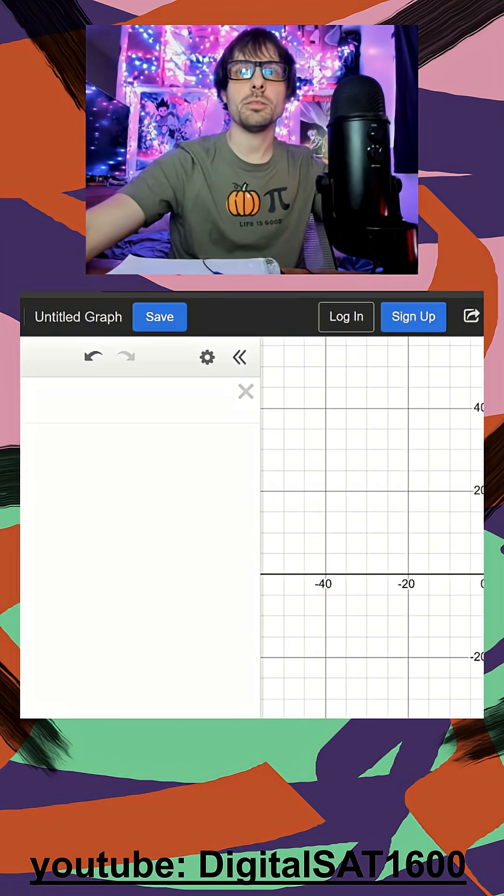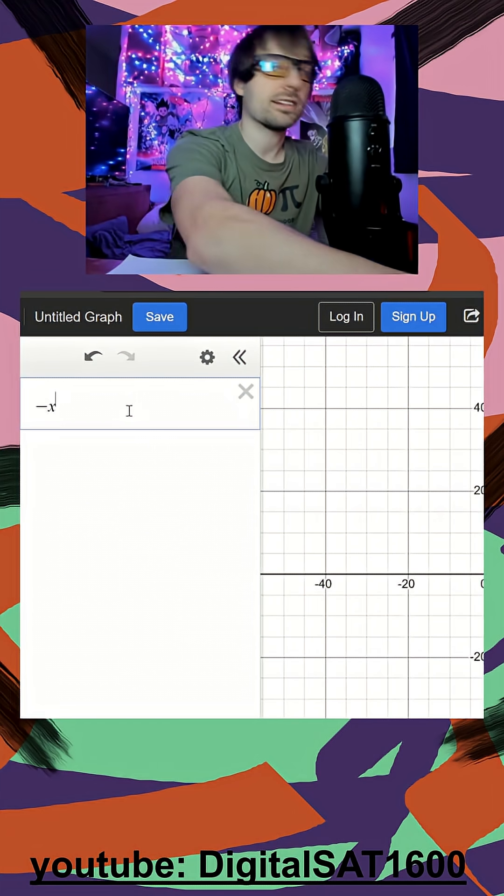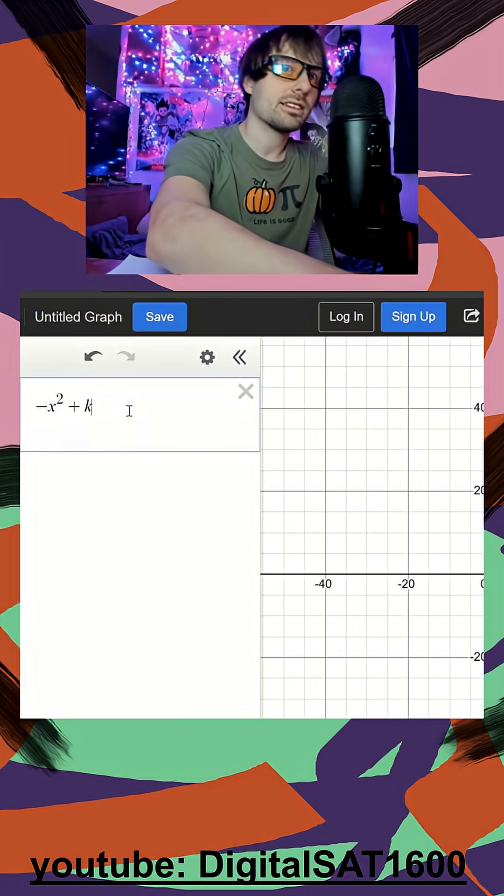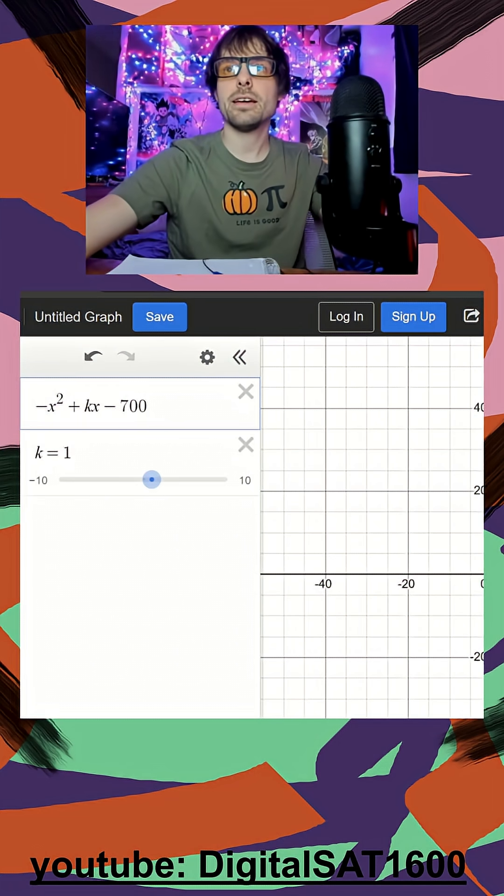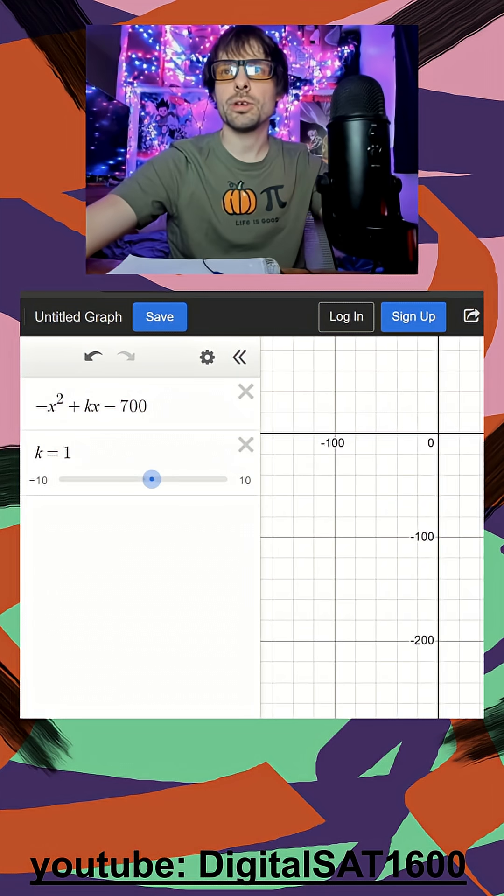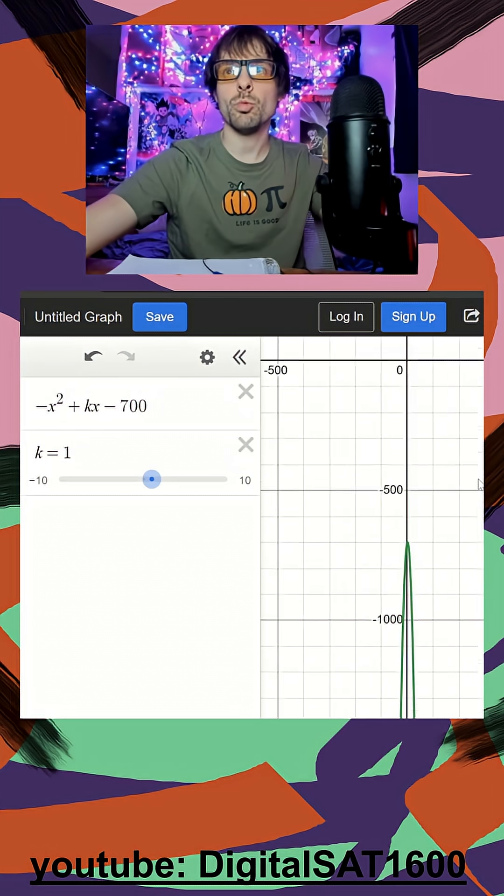So I'm definitely going to pull this up already. And I'm going to make negative x to the second plus kx minus 700. Add a slider for my k. And we want to try to find our parabola here. And it looks like it's going to be way down there, right?